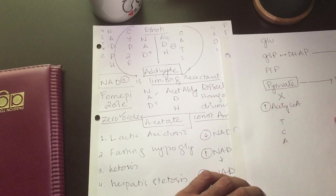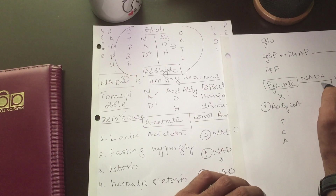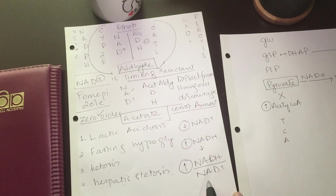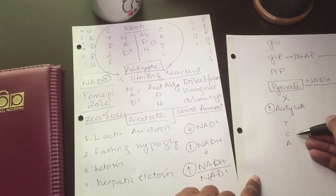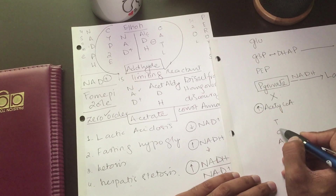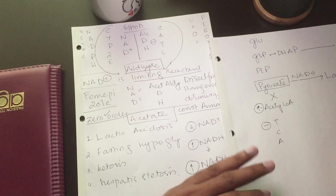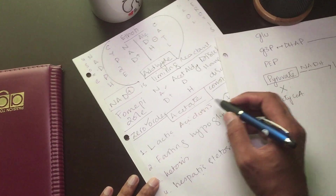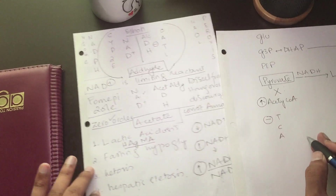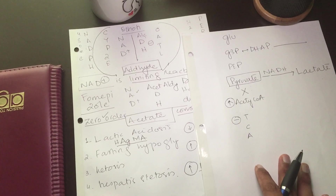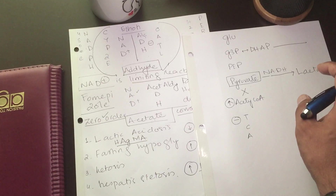This bypass happens due to the excess of NADH. Because of NAD+ depletion, pyruvate cannot be processed into acetyl-CoA, the TCA cycle is inhibited, and pyruvate diverts into lactate. This results in lactic acidosis — a high anion gap metabolic acidosis — and the patient presents with lactic acidosis symptoms.